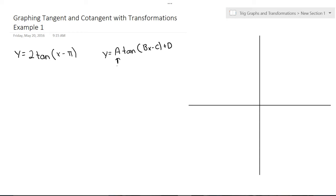Where A is our amplitude, B helps us figure out our period. Our period for tangent is pi, because that's the standard period, divided by the absolute value of our B.